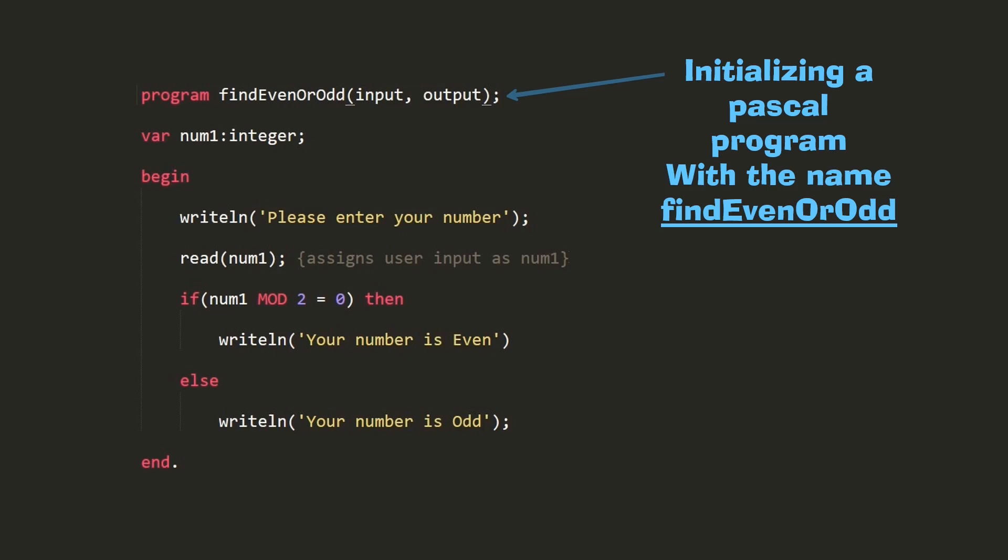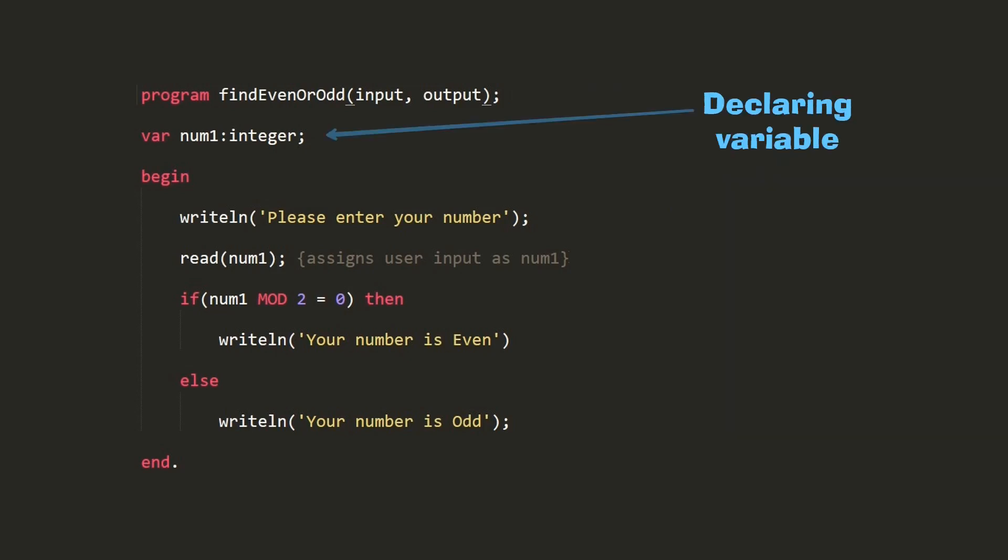Secondly, we declare the variables and constants we are going to use throughout our program. I haven't included any constants here, but if we have any constant, we have to declare it before the variable.